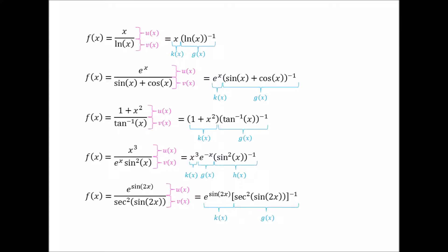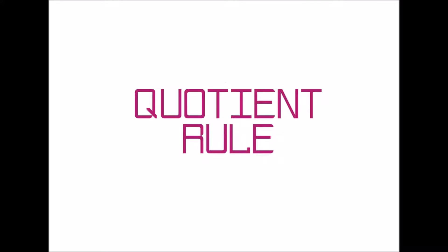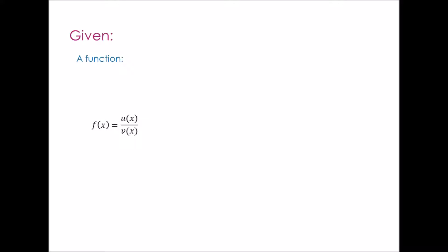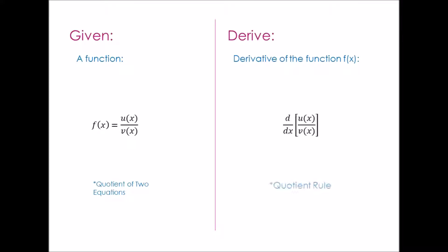So it begs the question: can we derive another rule that simplifies the process for such quotients? Well, the answer is of course. That specific rule we are going to devise is called the quotient rule. In this video, which is part one of my two-part series, I will go over the proof of that rule. So given a function f of x equal to u of x over v of x — a quotient of two functions — we want to derive the derivative of this function, or in other words, we want to prove the quotient rule.